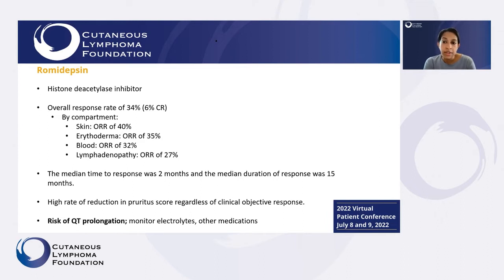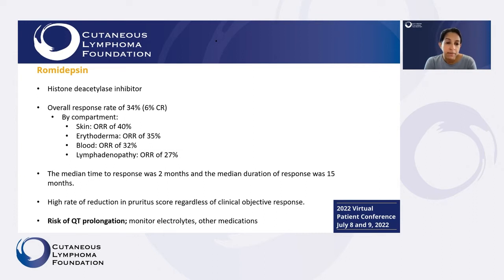Another medication used in more advanced stage lymphomas is romidepsin. This is an IV treatment — it's a histone deacetylase inhibitor. It has an overall response rate in trials of about 34 percent, but it does seem to be particularly more effective in the skin and in patients who have erythroderma associated with Sézary syndrome. It has a fairly rapid time to achieving some response of about two months, and median duration of response lasts for about a year — meaning some people responded more quickly and some people did have a longer response.